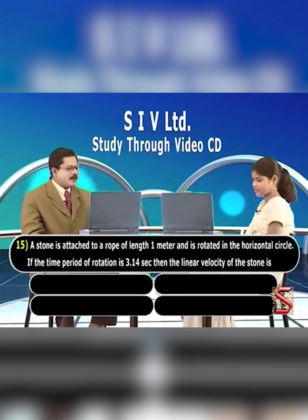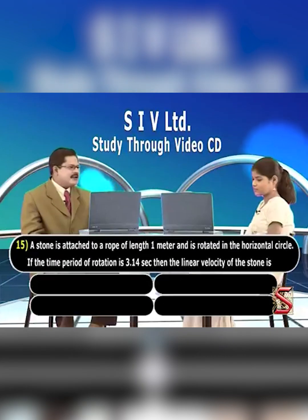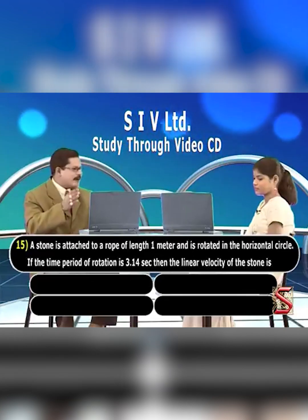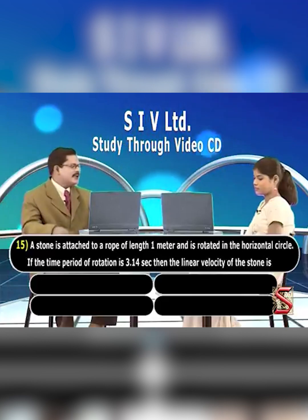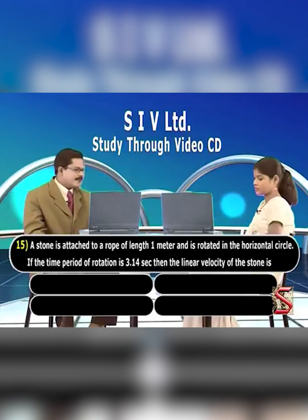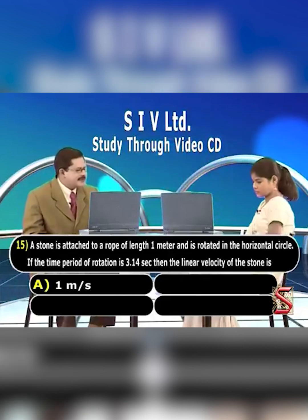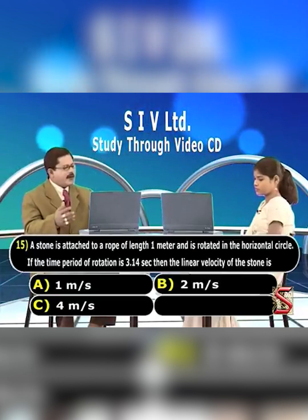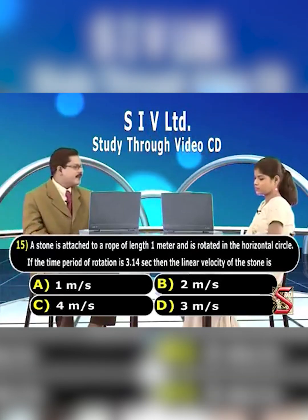A stone is attached to a rope of length 1 meter and is rotated in a horizontal circle. If the time period of rotation is 3.14 seconds, then the linear velocity of the stone is: A. 1 meter per second, B. 2 meters per second, C. 4 meters per second, D. 3 meters per second.